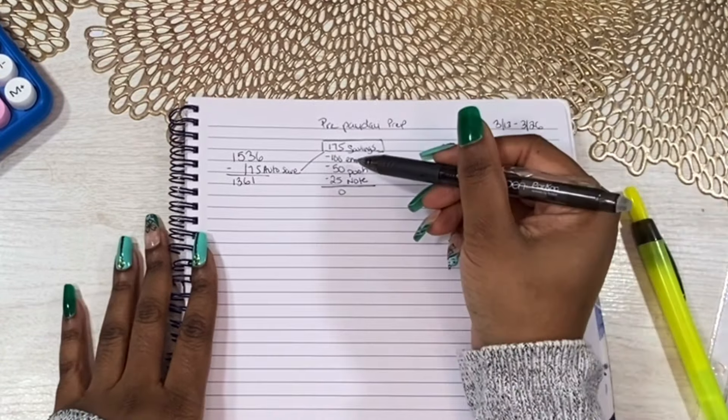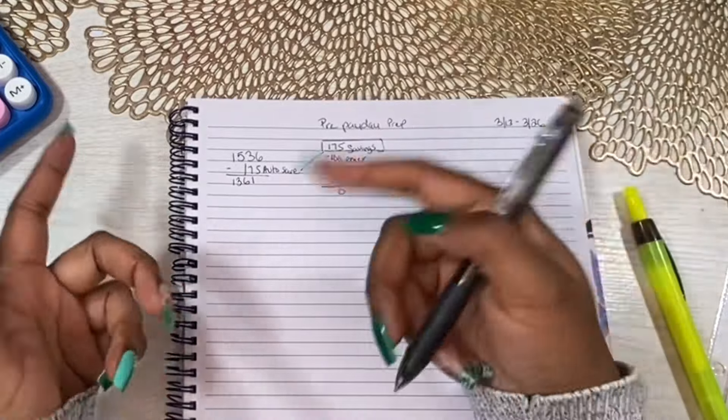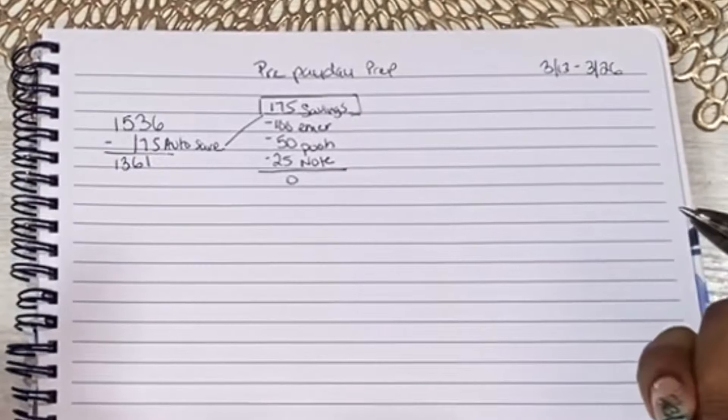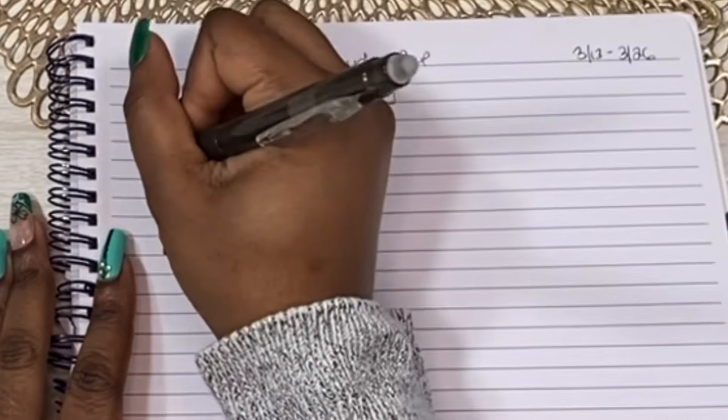$100 goes to my emergency fund. $50 goes to my daughter's saving account. And then $25 goes to supplement my car note. That's $100 right there that is going back to that savings account. But we have to replace it and keep going. So that's what I'm going to do.